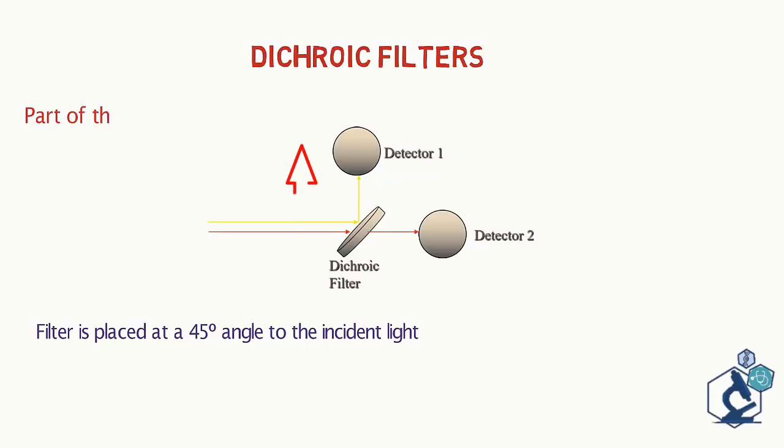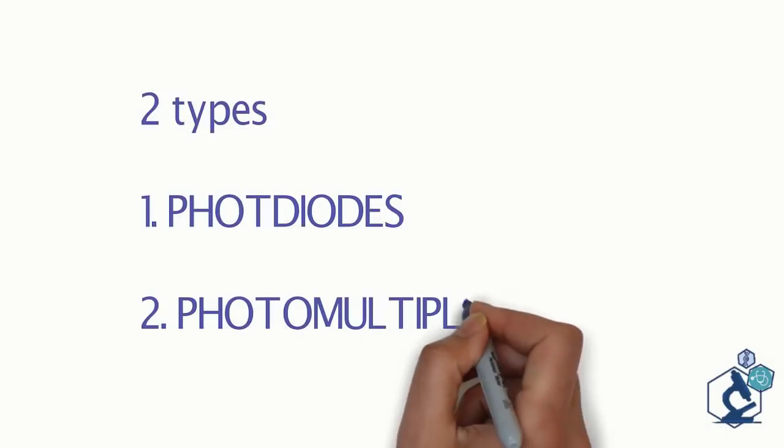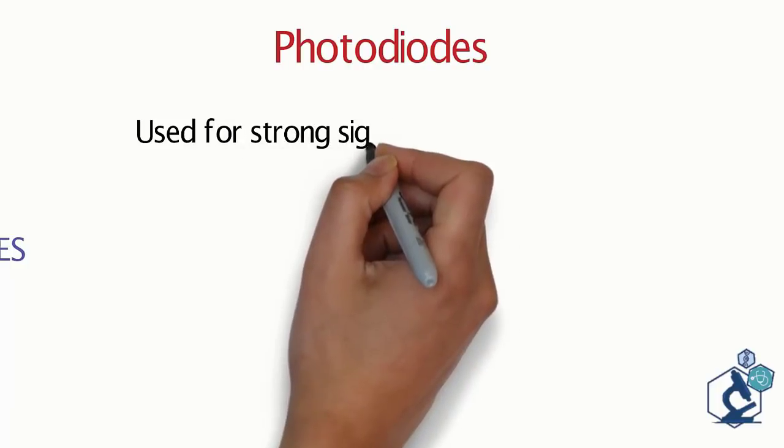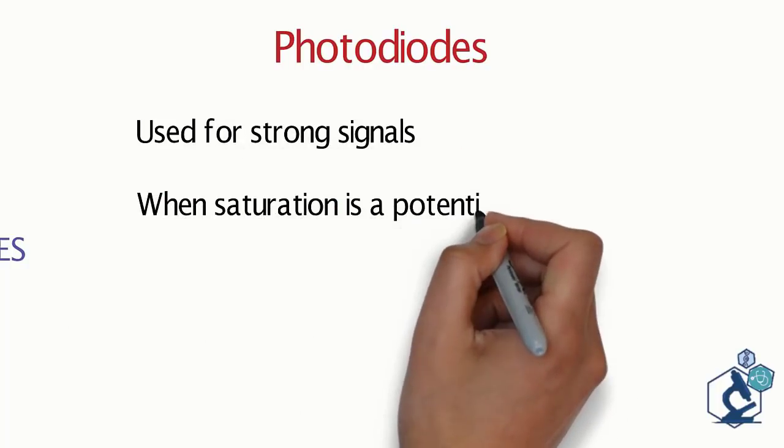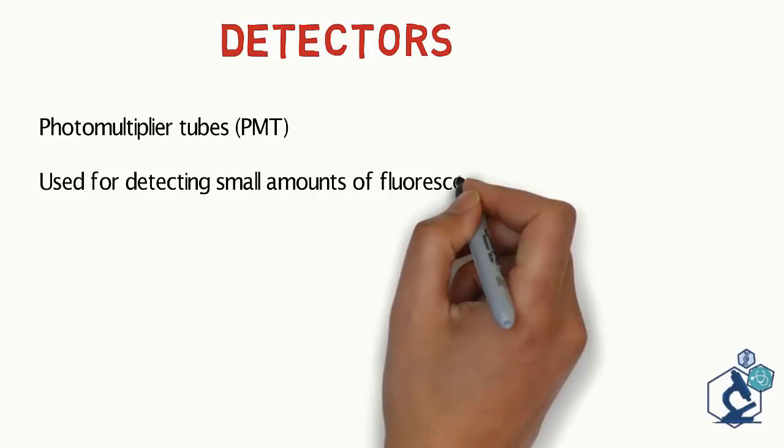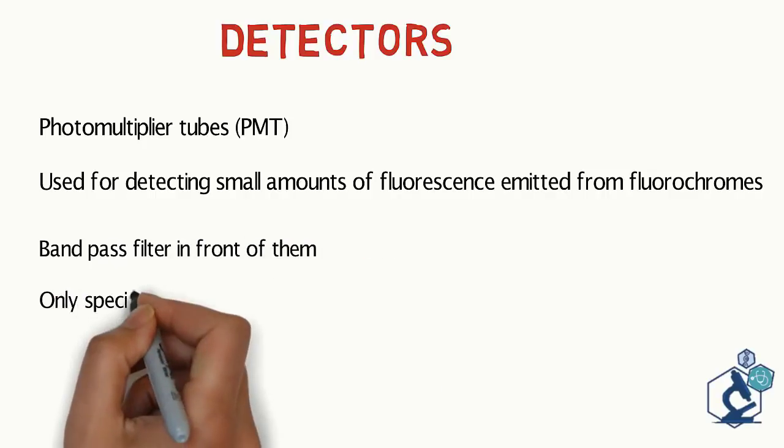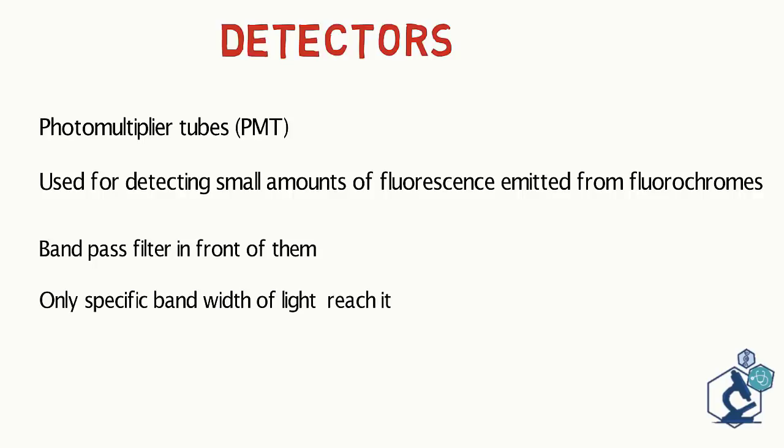Dichroic filters. Dichroic filters can be a long pass or short pass filter. They are placed at a 45 degree angle to the incident light. Part of it is reflected at 90 degrees to the incident light and part of the light is transmitted and continues. Now coming to detectors. There are two main types of photodetectors used in flow cytometry. Photodiodes which are used for strong signals when saturation is a potential problem, e.g. a forward scatter detector. Photomultiplier tubes or PMT, more sensitive than a photodiode. A PMT is used for detecting small amounts of fluorescence emitted from the fluorochromes. Photodetectors usually have a band pass filter in front of them to only allow a specific bandwidth of light to reach it. Therefore, each detector has a range of light it can detect once a filter has been placed in front of it.